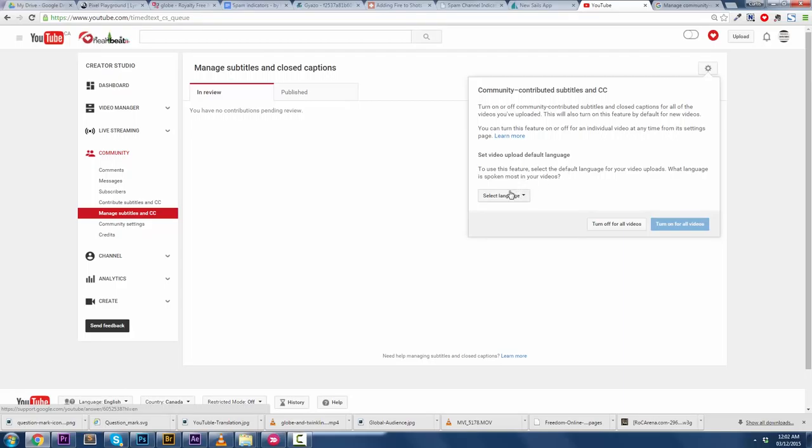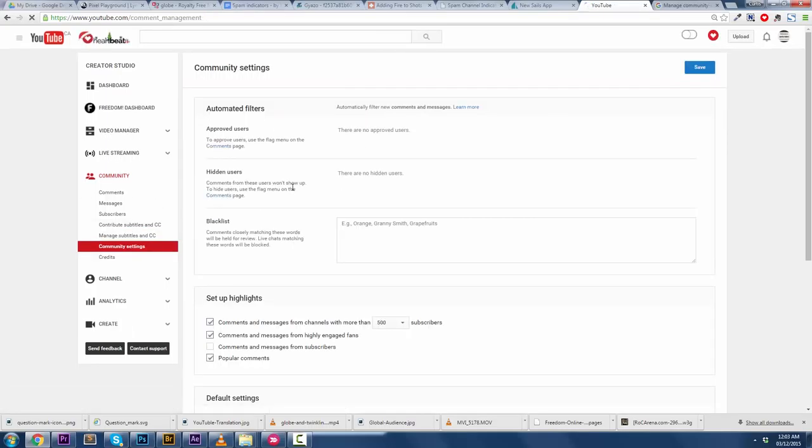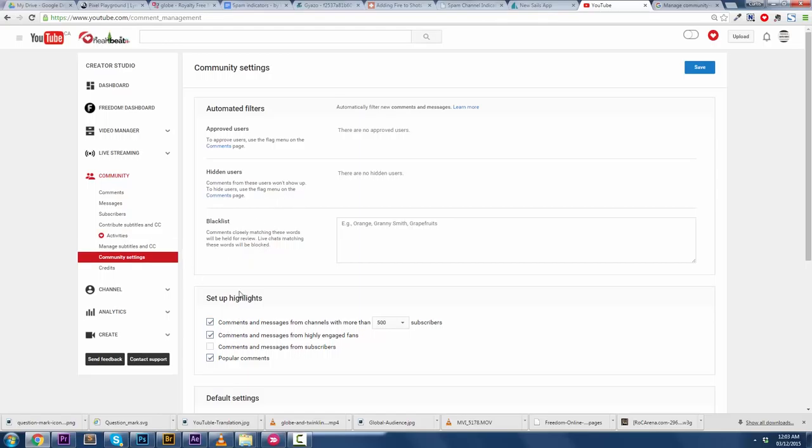So as you can see here, you can turn on or off community-contributed subtitles and closed captions, etc., etc. To use this feature, da-da-da-da-da-da, what language? I speak English. All right. Turn on for all videos or turn off for all videos? We're going to turn on for all videos at this point. Bang. Community-contributed subtitles in CC turned on for all videos. Guys, community people can go in and go nuts and get on this. So there you go. That's how you enable it.